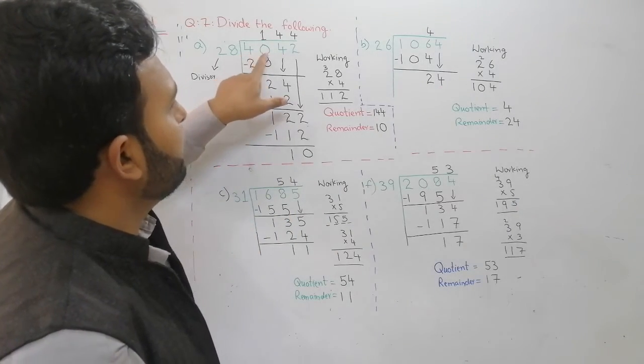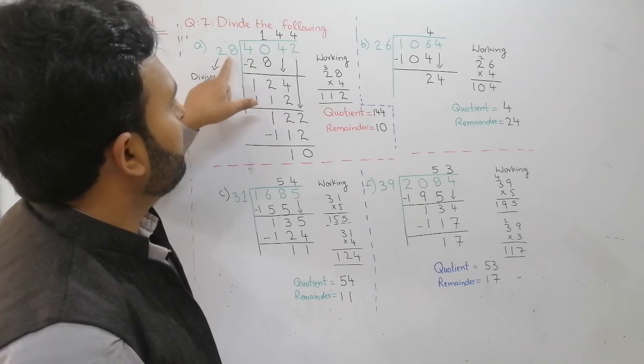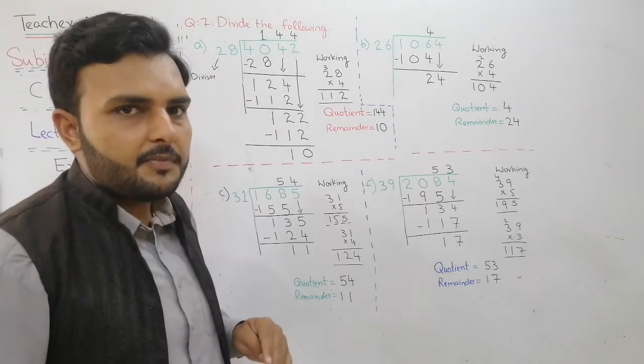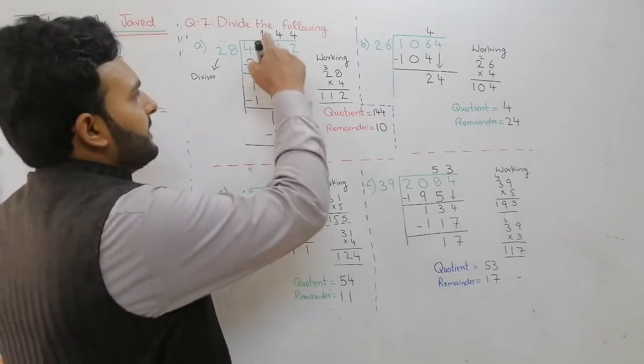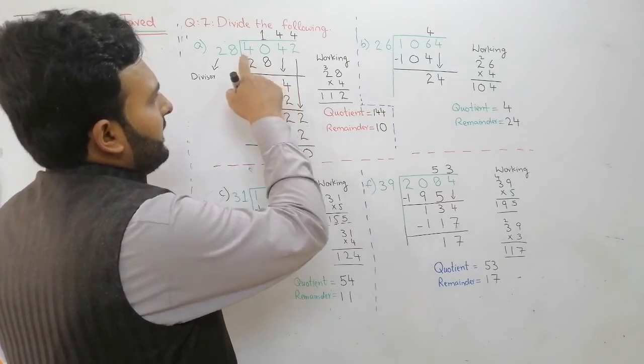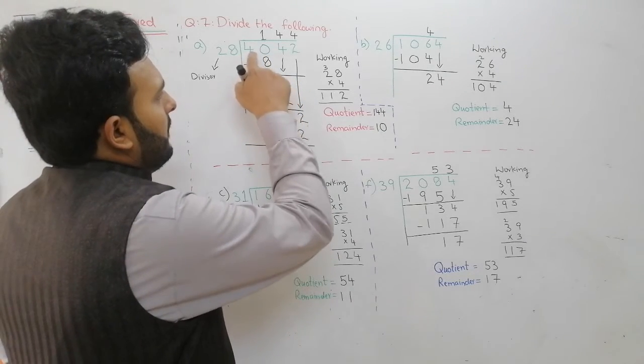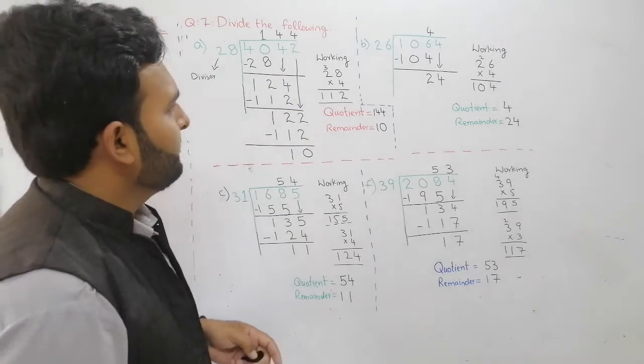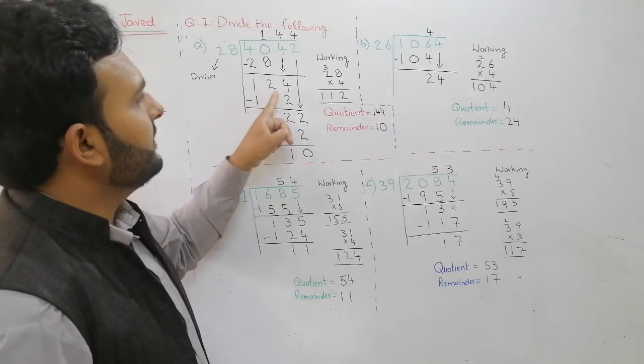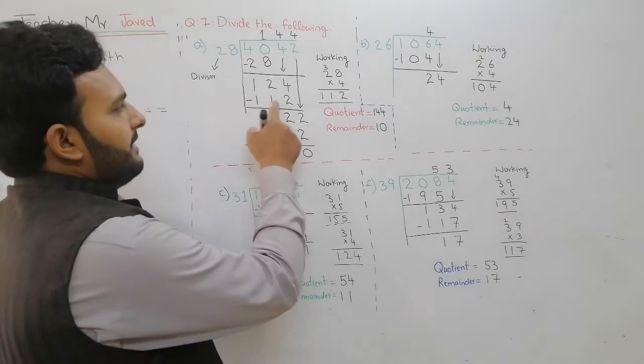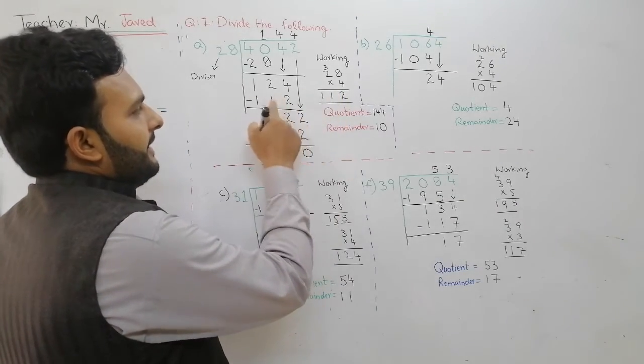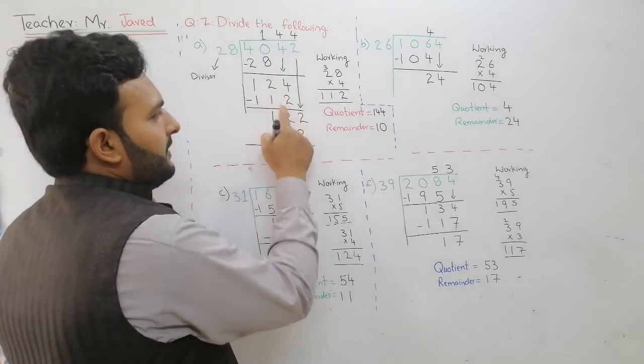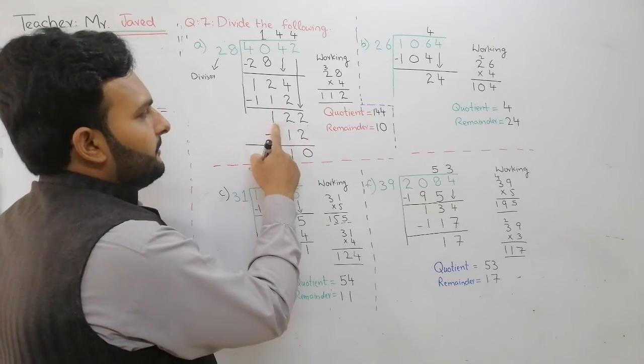So we have to take two numbers. This is 40 because it is bigger than 28. So we have to divide them into 28. 3 by 2 is 1 and 4 will come down, 124, and then we will write this table 4 times, so 112 will come down.